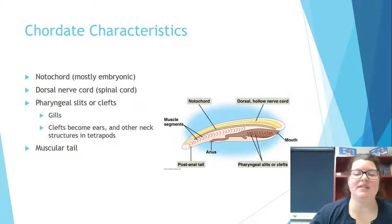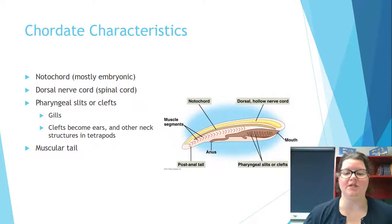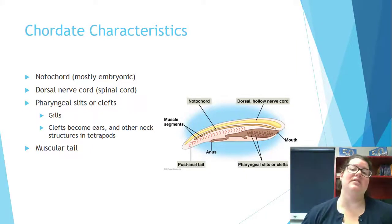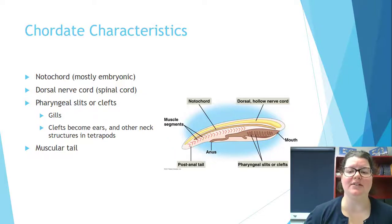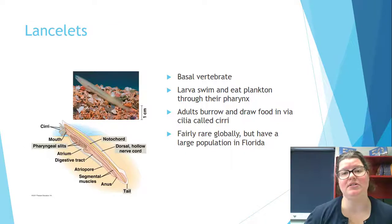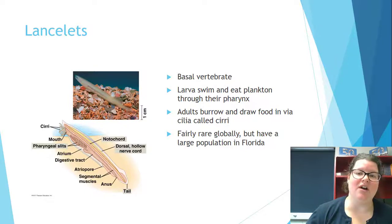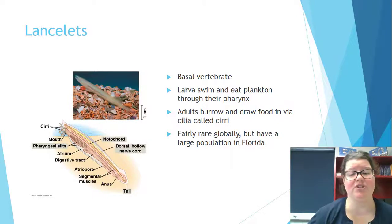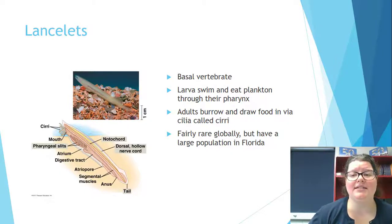This is what a notochord looks like — most juvenile vertebrates even today have this basic structure: the hollow nerve cord, the notochord connecting everything, and muscle segments feeding into it. One group that retains this adult form is the lancelets, which look kind of like leeches but are not parasitic — they are suspension feeders. They're common off the coast of Florida, though their habitat is extremely endangered due to plastic pollution.